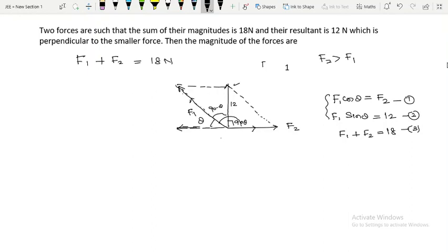Yehaan se F1 nikaal saktay ho. Kaisi nikaal saktay ho? Square karke add karlo. Toh jib square karke add karo ho toh F1 cos square theta plus sin square theta will be equal to F2 squared plus 144.